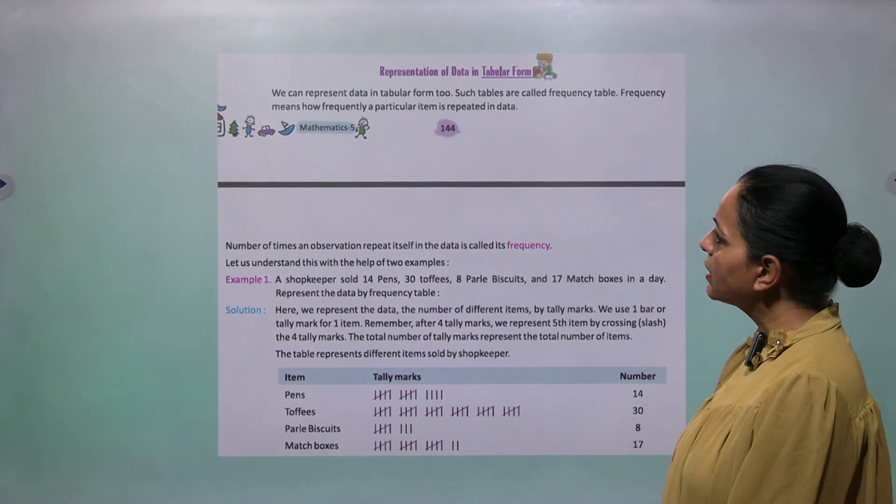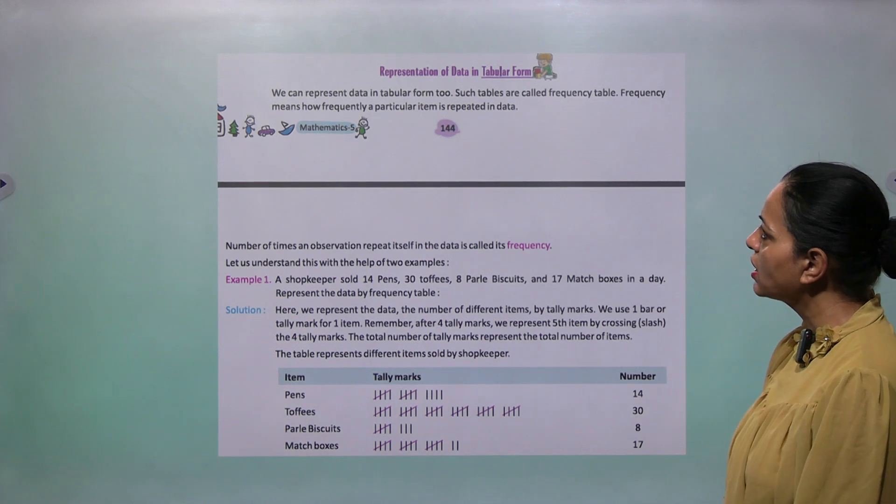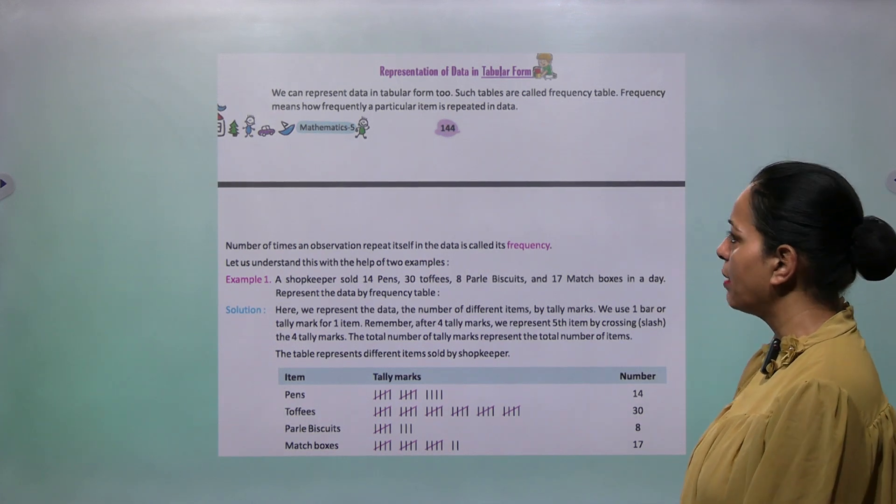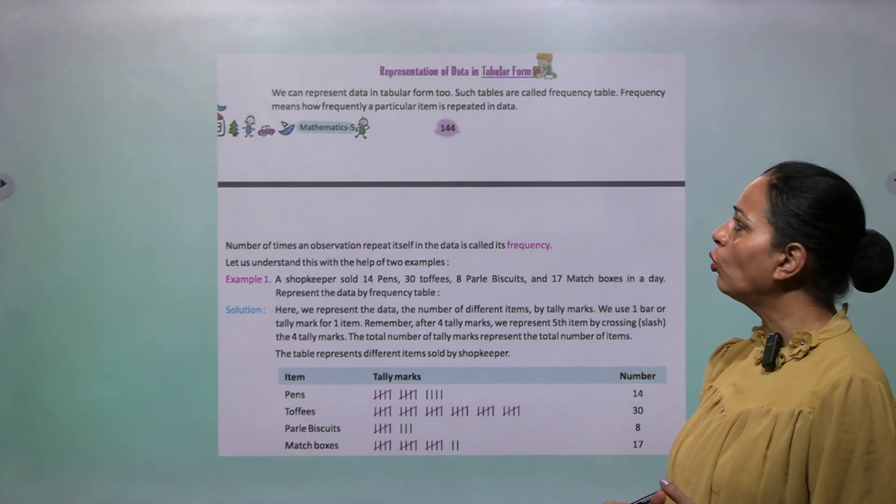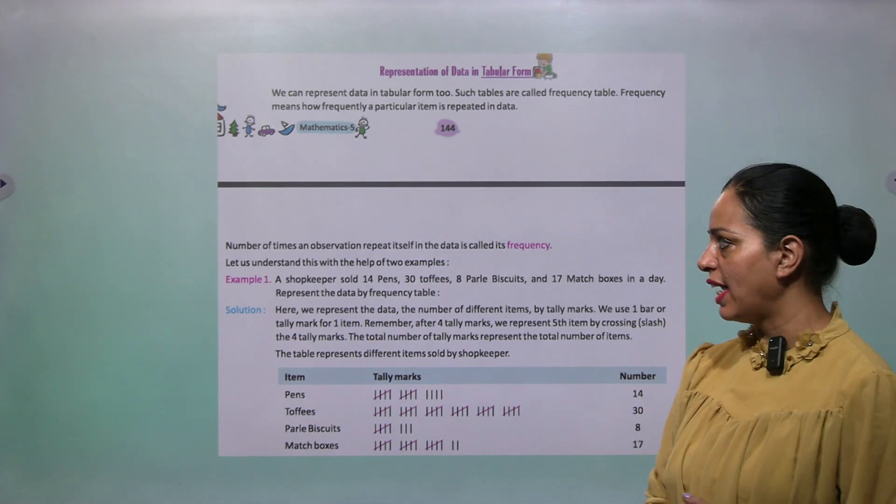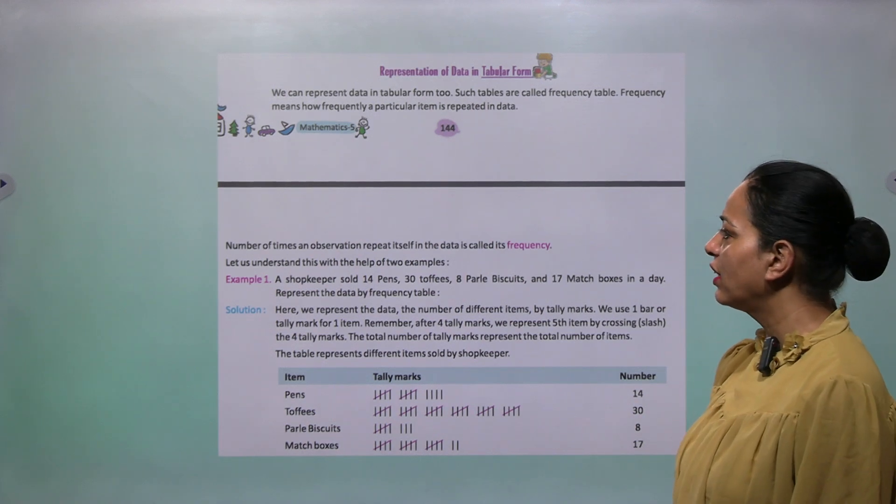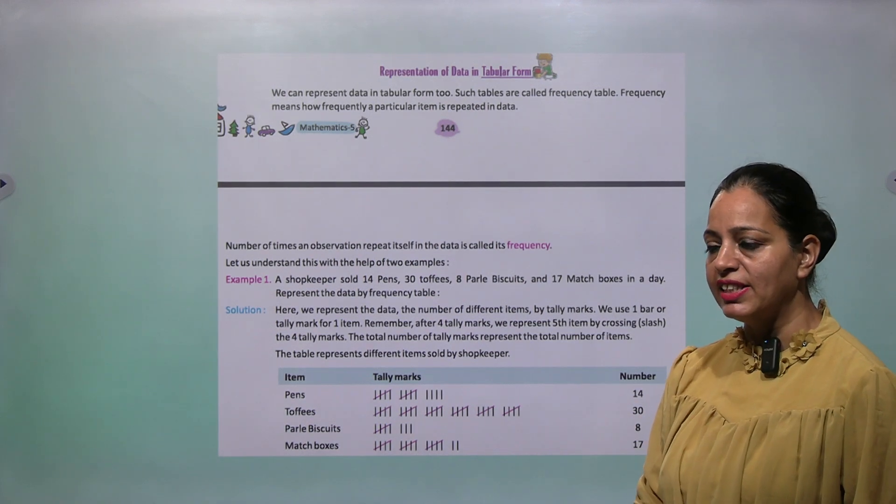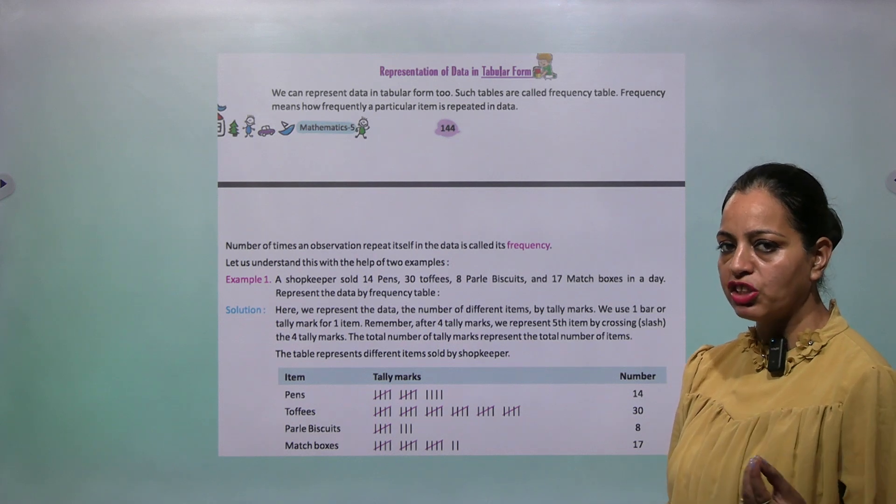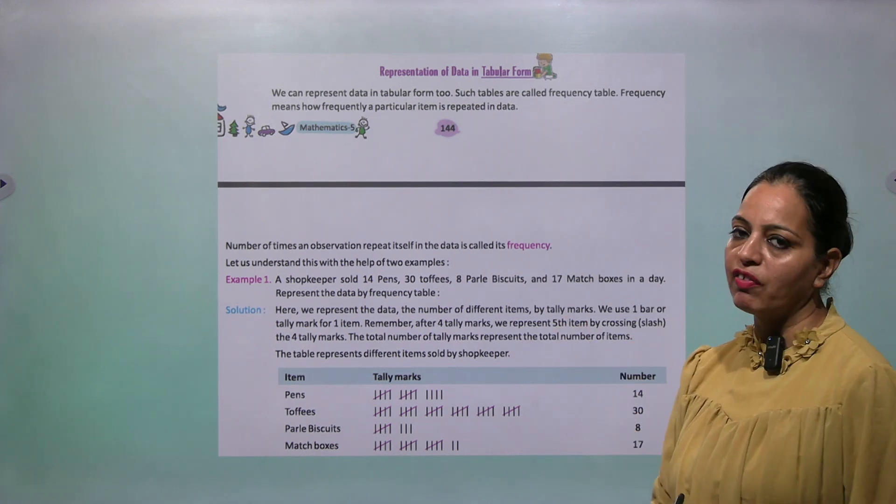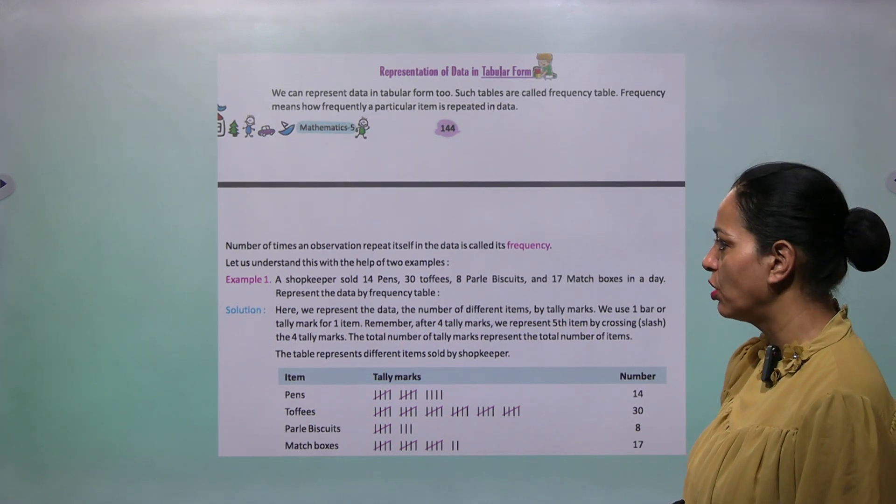The first one is representation of data in tabular form. We can represent data in tabular form. Two such tables are called frequency tables. Frequency means how frequently a particular item is repeated in data. Number of times an observation repeats itself in the data is called frequency.